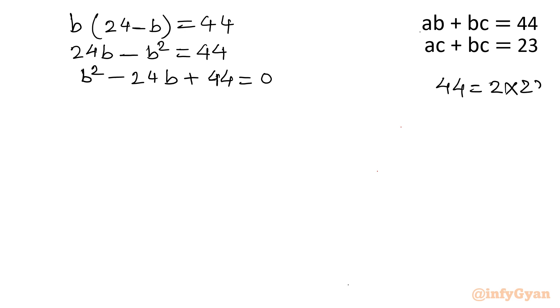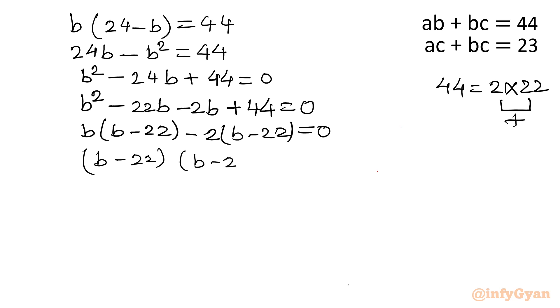If I add both, that is middle term. So I will split middle term as minus 22b minus 2b. The product of both numbers is 44. Now take b common from the first two terms: b(b minus 22). Take minus 2 common from the last two terms: minus 2(b minus 22). So automatically (b minus 2) will be your complete common. So what is coming out? B equal to 2 or b equal to 22.